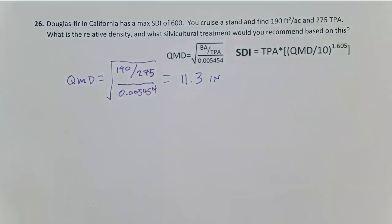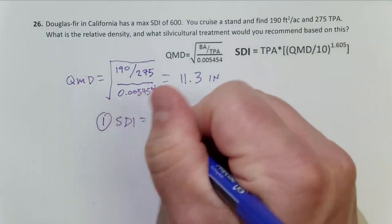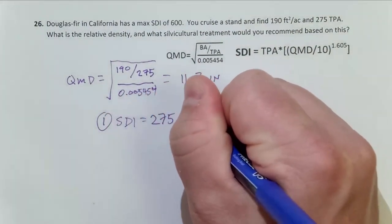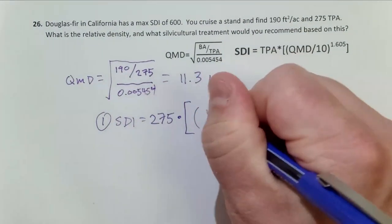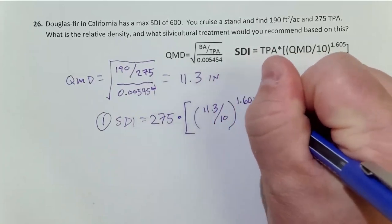Okay, so now it's back to our three-step problem. Step one: SDI equals trees per acre 275 times 11.3 over 10, raised to the 1.605 power.